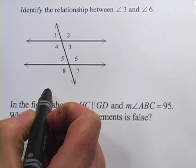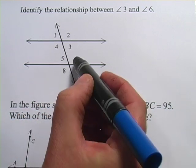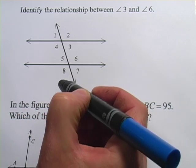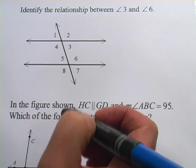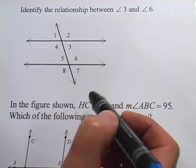So two and four are going to have the same measure. And that's going to be exactly the same measure as six and eight. One and three are going to have the same measure. And that's going to be the same as the measures of five and seven.